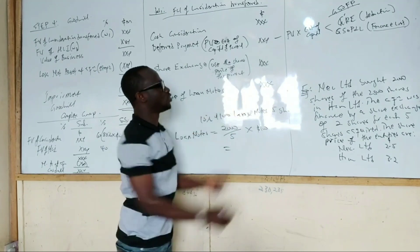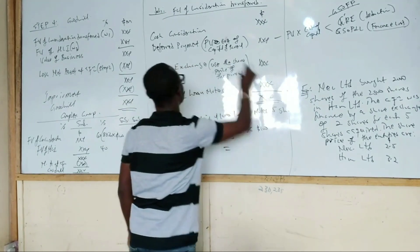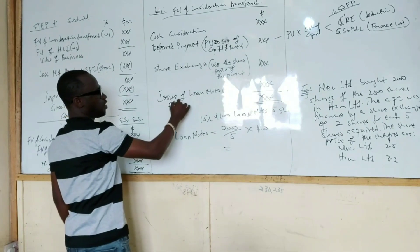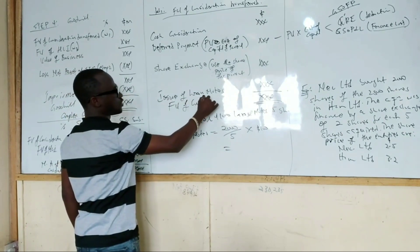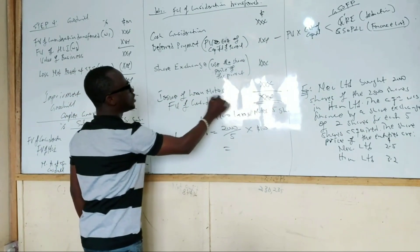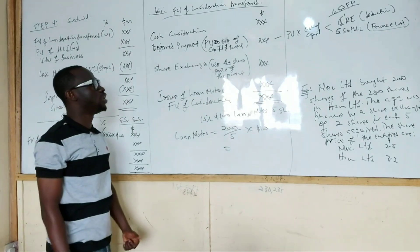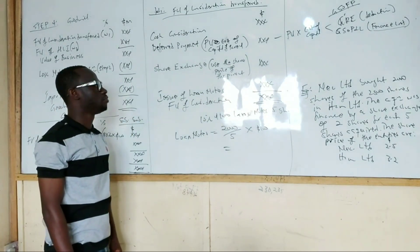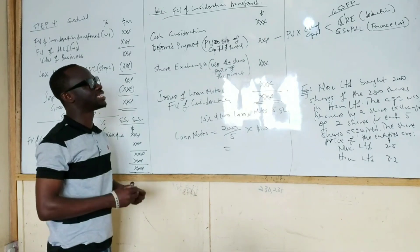So these four things added together is what sum up to become the fair value of consideration transfer. Depending on how generous the examiner is, he can bring you two of them or three of them in a question. And that is how he treats them.